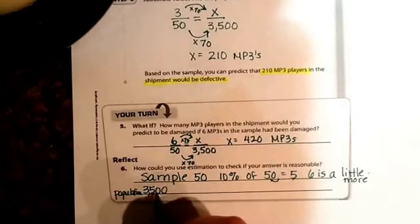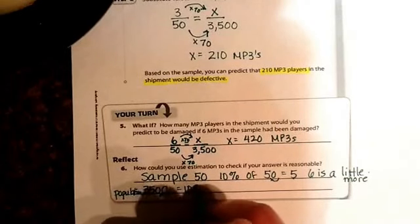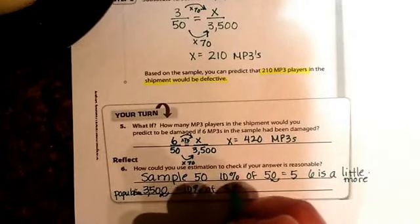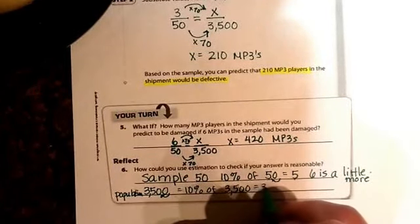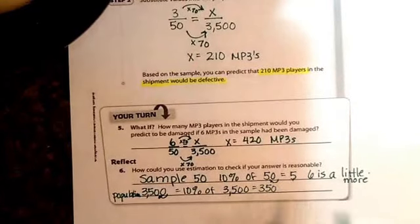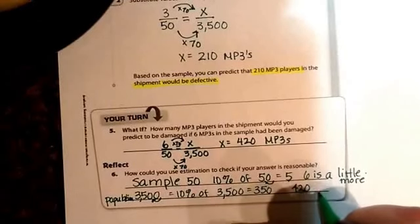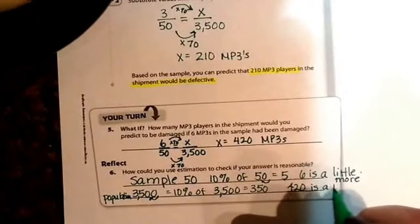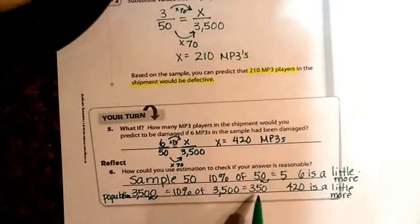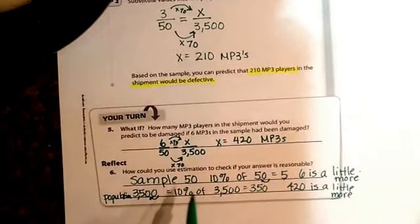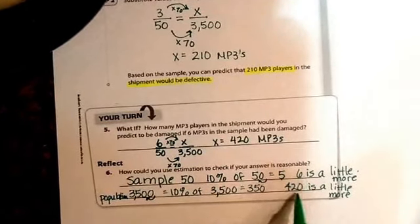If I take 10% of this number—10% of 3,500—again, I would just move that decimal over one. That's going to equal 350. Well, my answer was 420. And is 420 also a little more than 350? Yes. So this is how we could use estimation to make sure that our answer is reasonable, and we can see that it is reasonable.